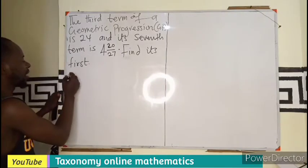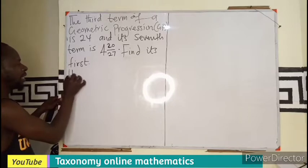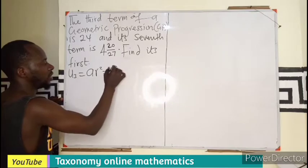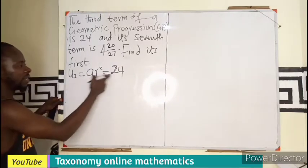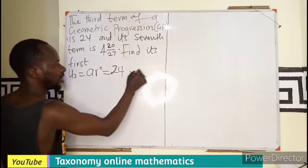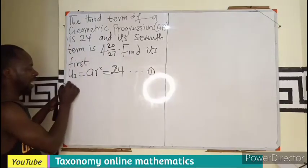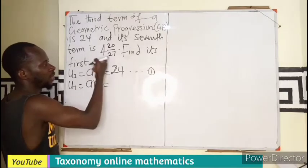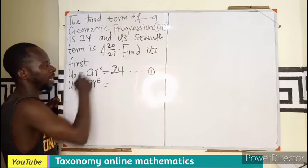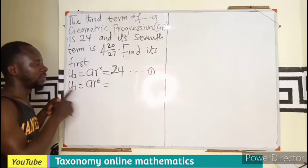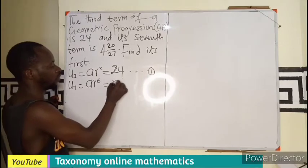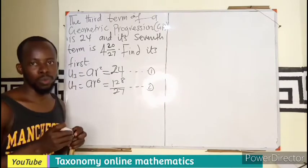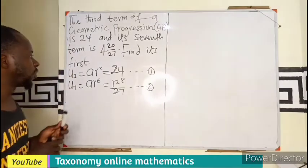We can say that our third term which is ar² is the same as 24. Let's label this as equation 1. Then our seventh term is going to be ar⁶. We can change this to 128 over 27 to be our equation 2. So this becomes two simultaneous equations.